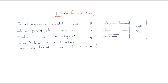The next method is stator resistance starting. In this method, we add external resistances before giving the three-phase supply to the stator. For the R, Y, B supply, three resistances are connected — external resistance is connected in series with each phase of the stator winding during starting. These resistances cause a voltage drop.